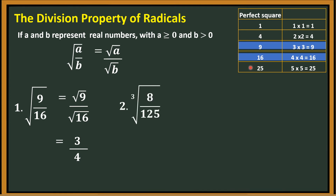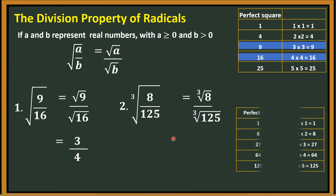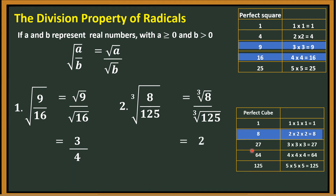Number 2: cube root of 8 over 125. We separate it as cube root of 8 over cube root of 125. The cube root of 8 is 2, and the cube root of 125 is 5. Therefore the final answer is 2 over 5.